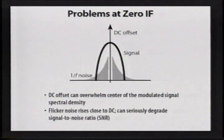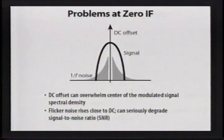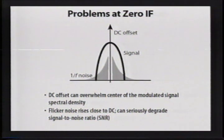There are some other problems at zero IF, despite its attractiveness for high levels of integration. First, after the signal has been down-converted, it is amplified and filtered at baseband with on-chip integrated circuits that all suffer from offsets. Even with fully differential signal paths to design out systematic offsets, random transistor mismatches still cause DC offsets, and the small received signal competes with the DC offset lying right in the middle of the signal spectrum. In addition, in CMOS particularly, 1/f noise rises towards the center of the down-converted signal and degrades the signal-to-noise ratio.